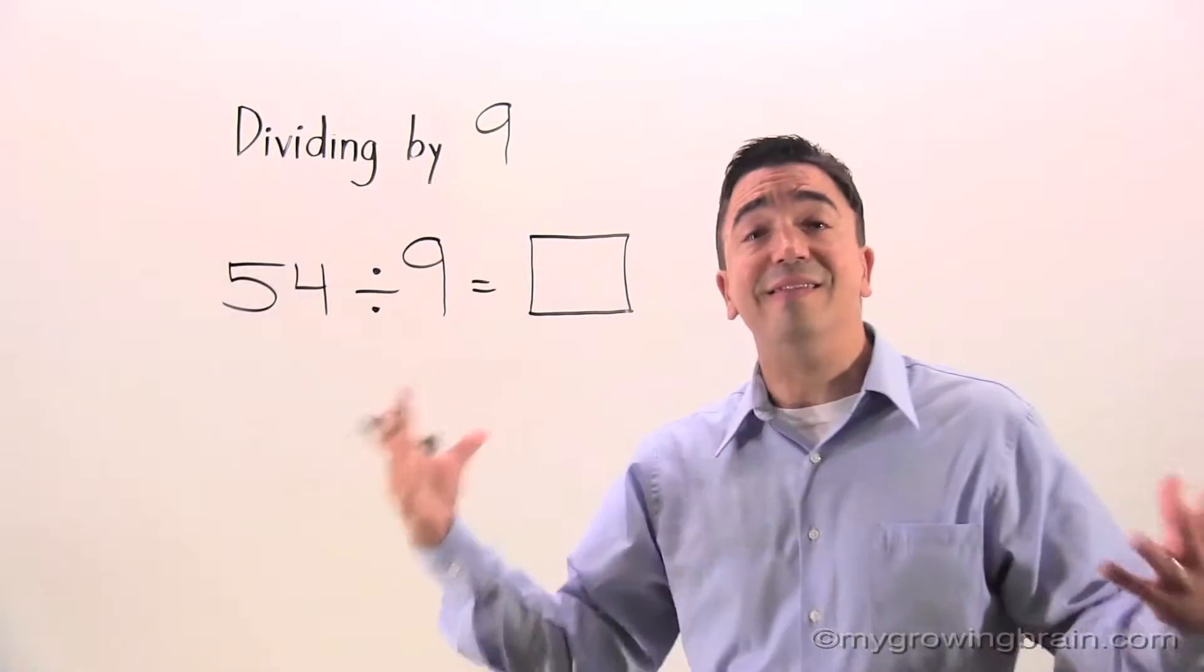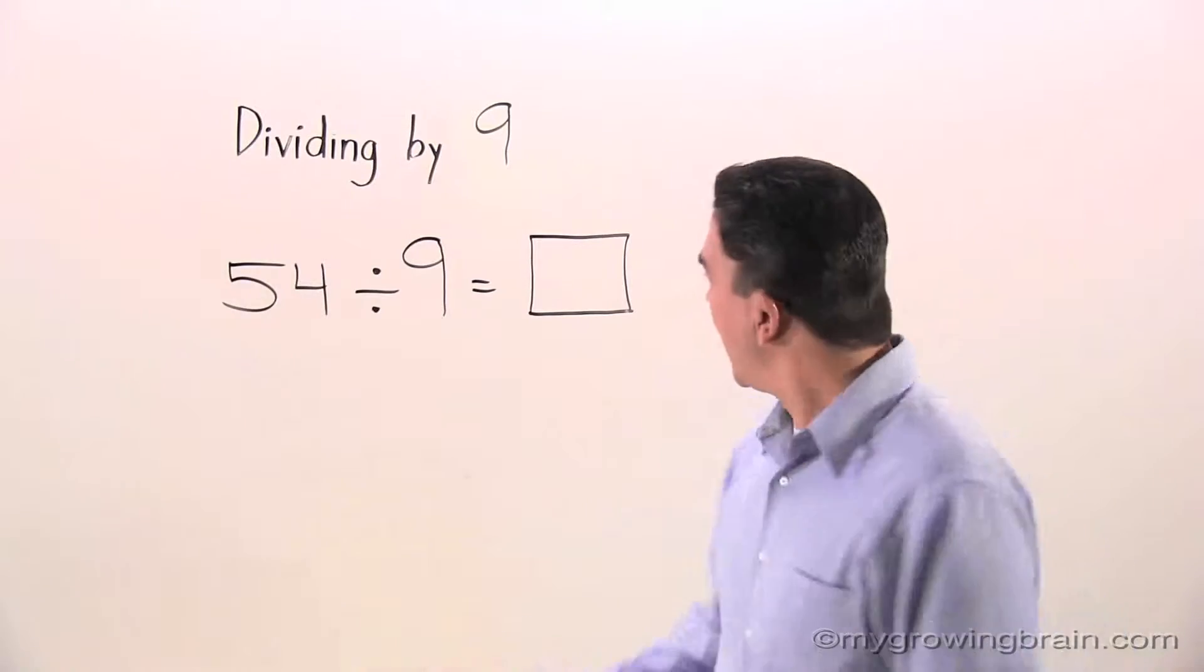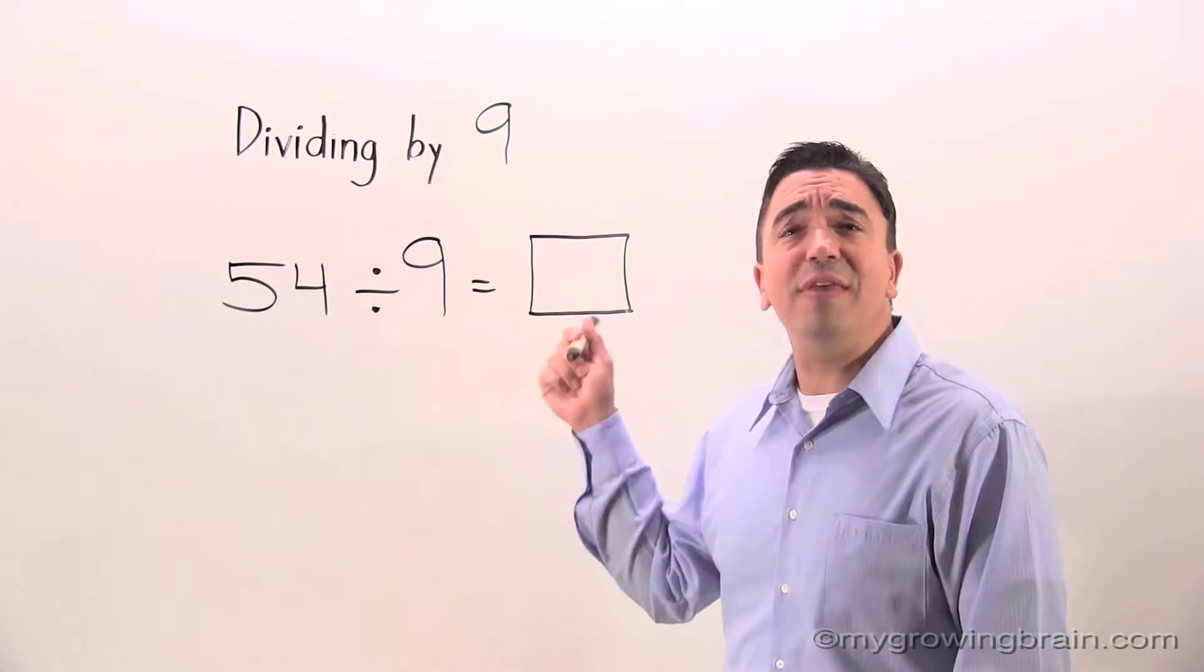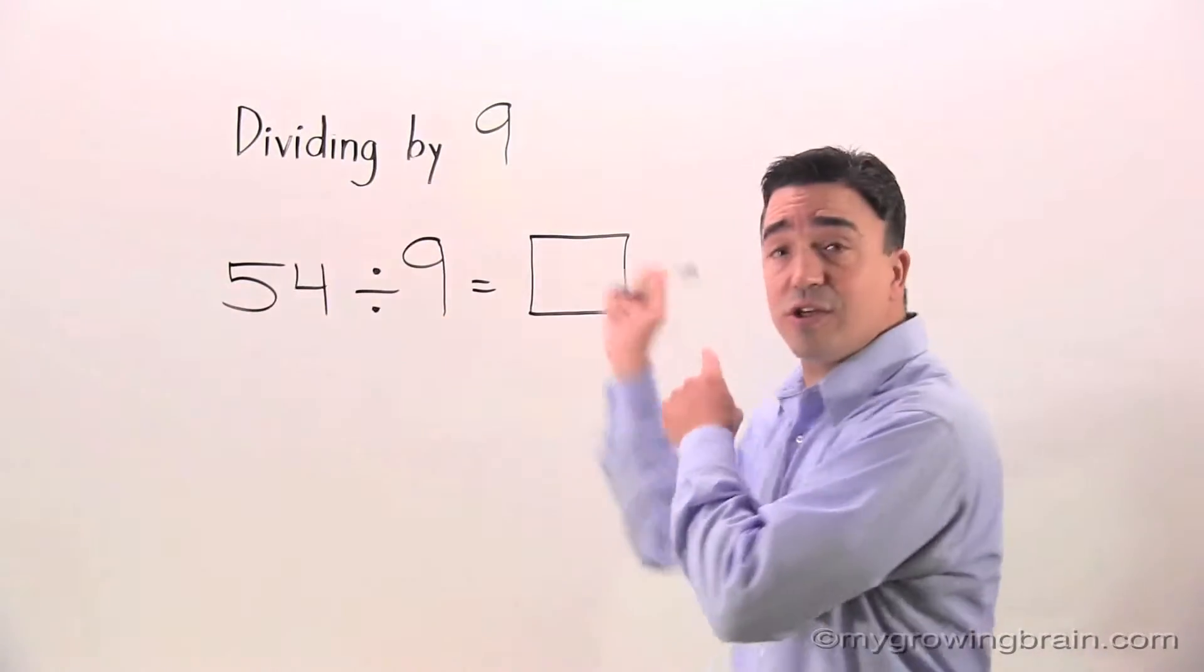54 is the dividend. 9 is the divisor. And this box right here, this is going to be the quotient. This is going to be the answer to our division problem.